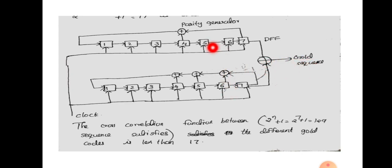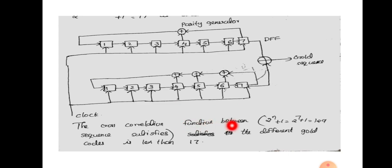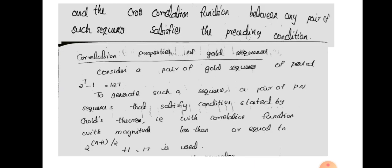Now let's do the simulation and visualize the cross-correlation value. The cross-correlation function between the different Gold sequences is less than 17 — the theoretical bound. In this example, the cross-correlation function values are less than 17, confirming the theoretical value stated by Gold's theorem.